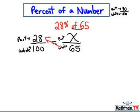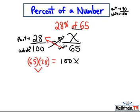And I just cross multiply. So we'll do 65 times 28 equals 100x. So that equals 1820 equals 100x. We'll divide both sides by 100.